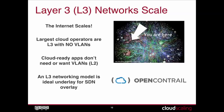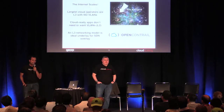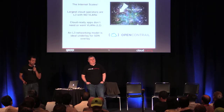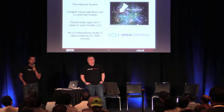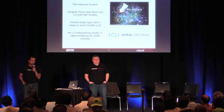Why L3 and not anything else? L3 scales — that's a well-known fact. Layer 3 networks are hierarchical, which enables route aggregation. As you go up, you can aggregate routes and announce aggregates instead of individual routes. The best example is the internet — the internet scales extremely well. Large cloud operators do not want VLANs because VLANs limit scalability in a number of ways. A pure L3 model also forms a great underlay for an overlay SDN, which is where the whole networking industry is moving.